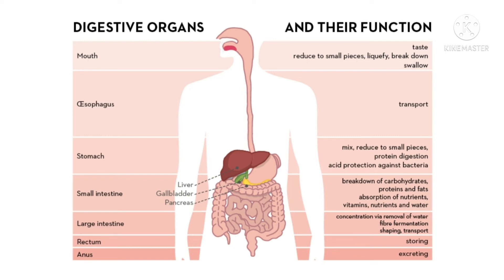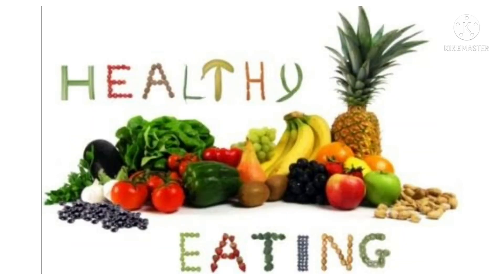The liver produces bile juice, which plays an important role in the digestion of food. The large intestine holds the food that cannot be digested, absorbs water from it, and forms waste called feces. Feces are removed from the body through the anus.